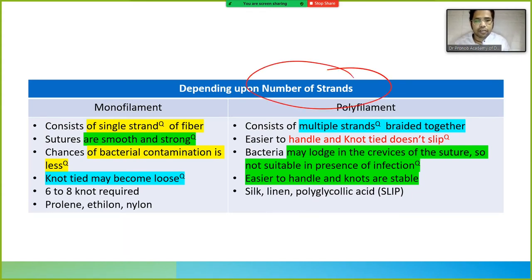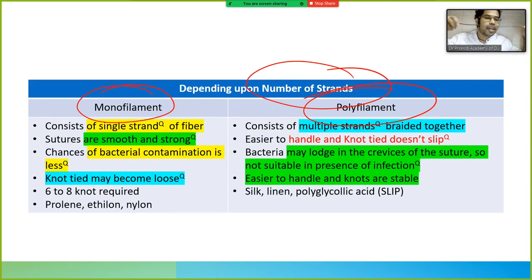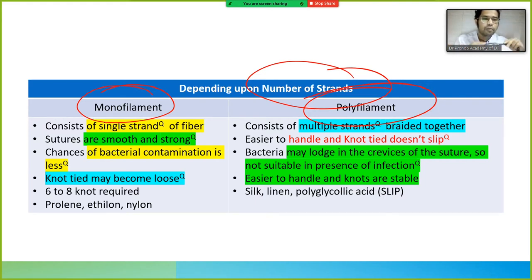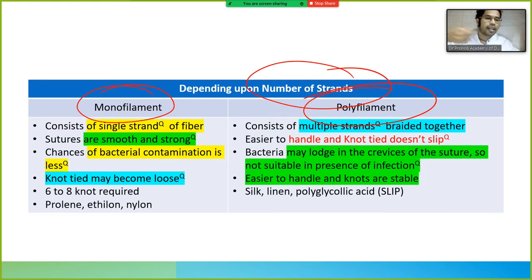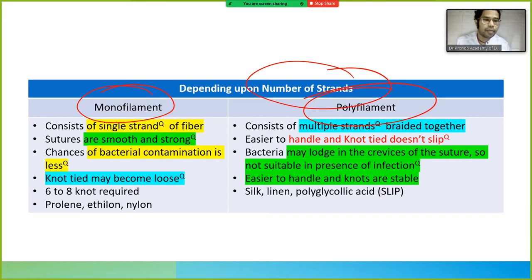Depending on the number of strands, sutures can be monofilament or polyfilament. Using a cable as an example: a single strand is monofilament, and when multiple strands are twisted together, that is polyfilament. The disadvantage of polyfilament is that there are crevices — small gaps — where bacteria can accumulate, making it unsuitable for infected wounds.